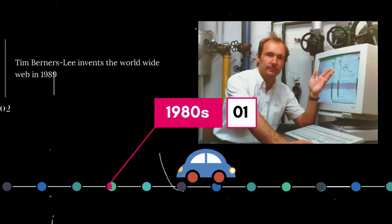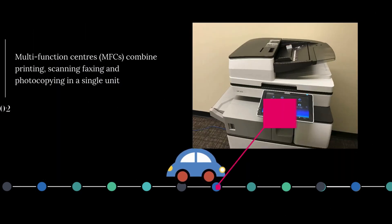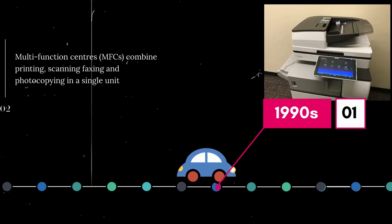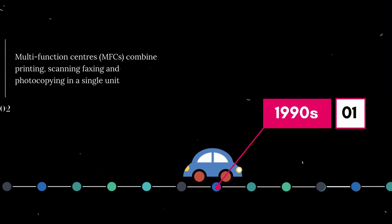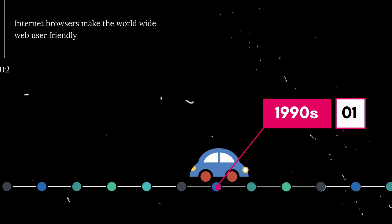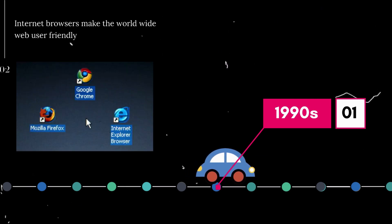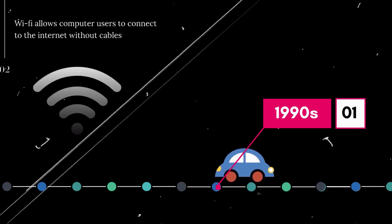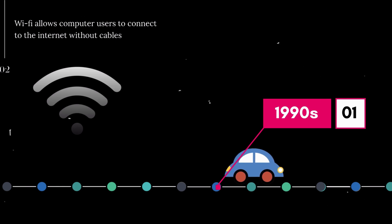In the 1990s, office multifunction centers - MFCs - combine printing, scanning, faxing, and photocopying in a single unit. Internet browsers make the World Wide Web user-friendly. Email takes off. Video conferencing becomes more affordable and widespread. Wi-Fi allows computer users to connect to the Internet without cables. The World Wide Web opens up.